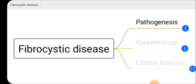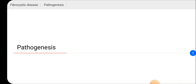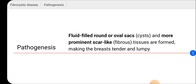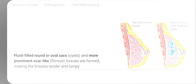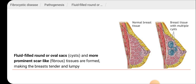When considering the pathogenesis of fibrocystic disease, it occurs with fluid-filled round or oval sacs called cysts, and more prominent scar-like fibrous tissues. These are formed making the breast tender and lumpy. As you can see in this picture, in a breast with fibrocystic disease multiple cysts are formed within the breast tissues, and fibrous tissue formation is also high.